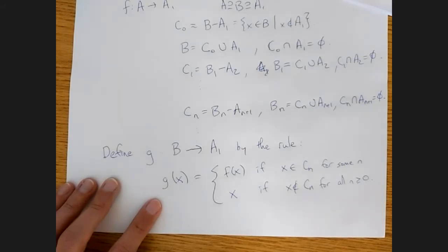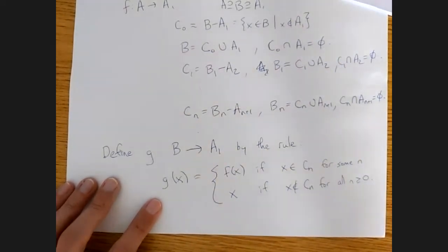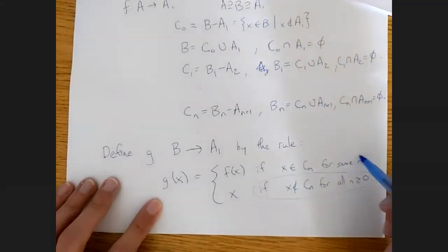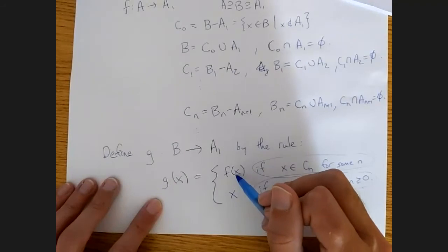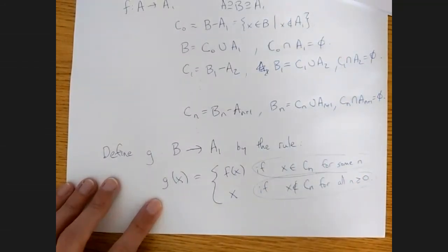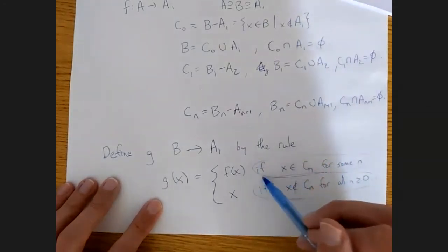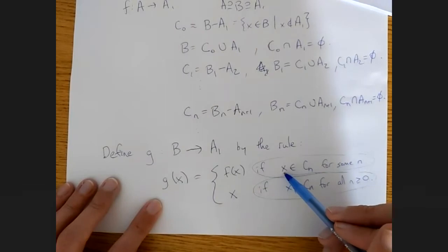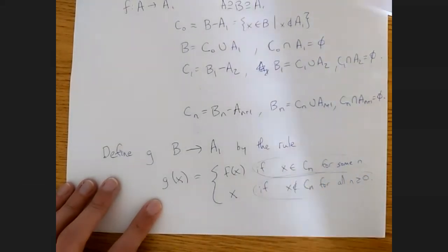We have to show that this is well-defined, one-to-one, and onto. The problem for well-defined would be if x is in cn for some n, but also not in any cn — if both conditions held for some x, there would be a problem because I've given two different definitions. But we see that's not a problem, just by the way it's defined.